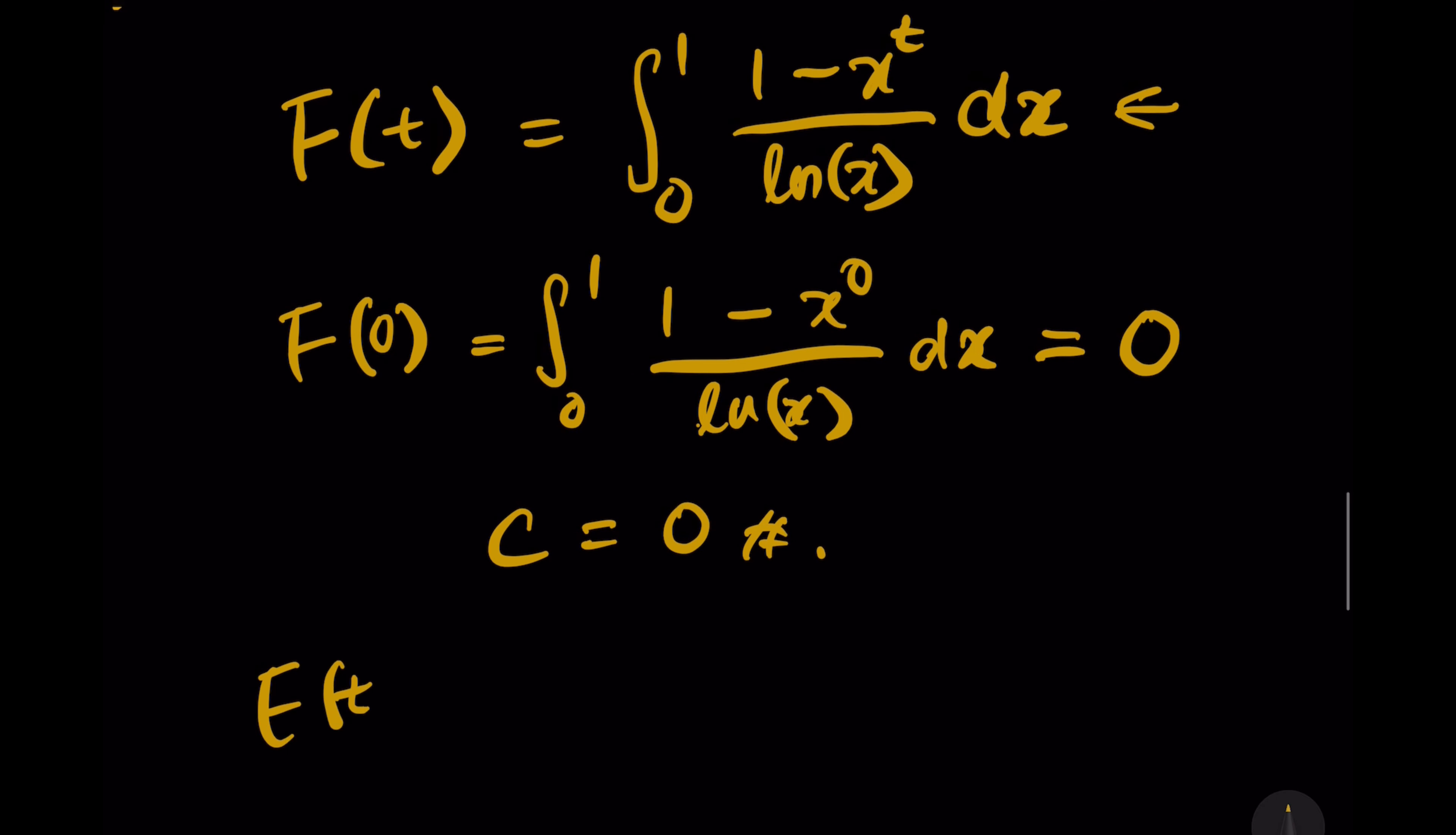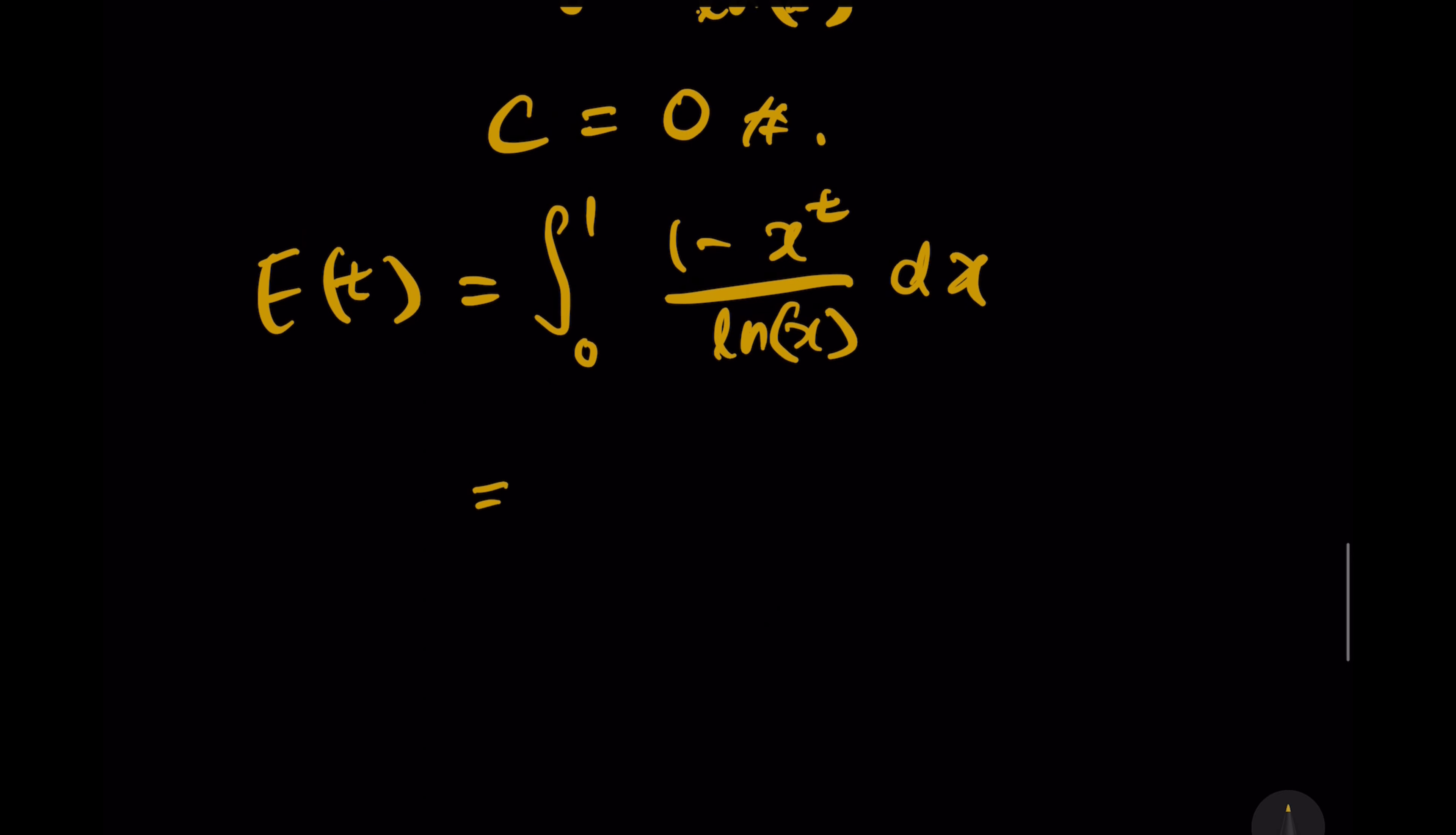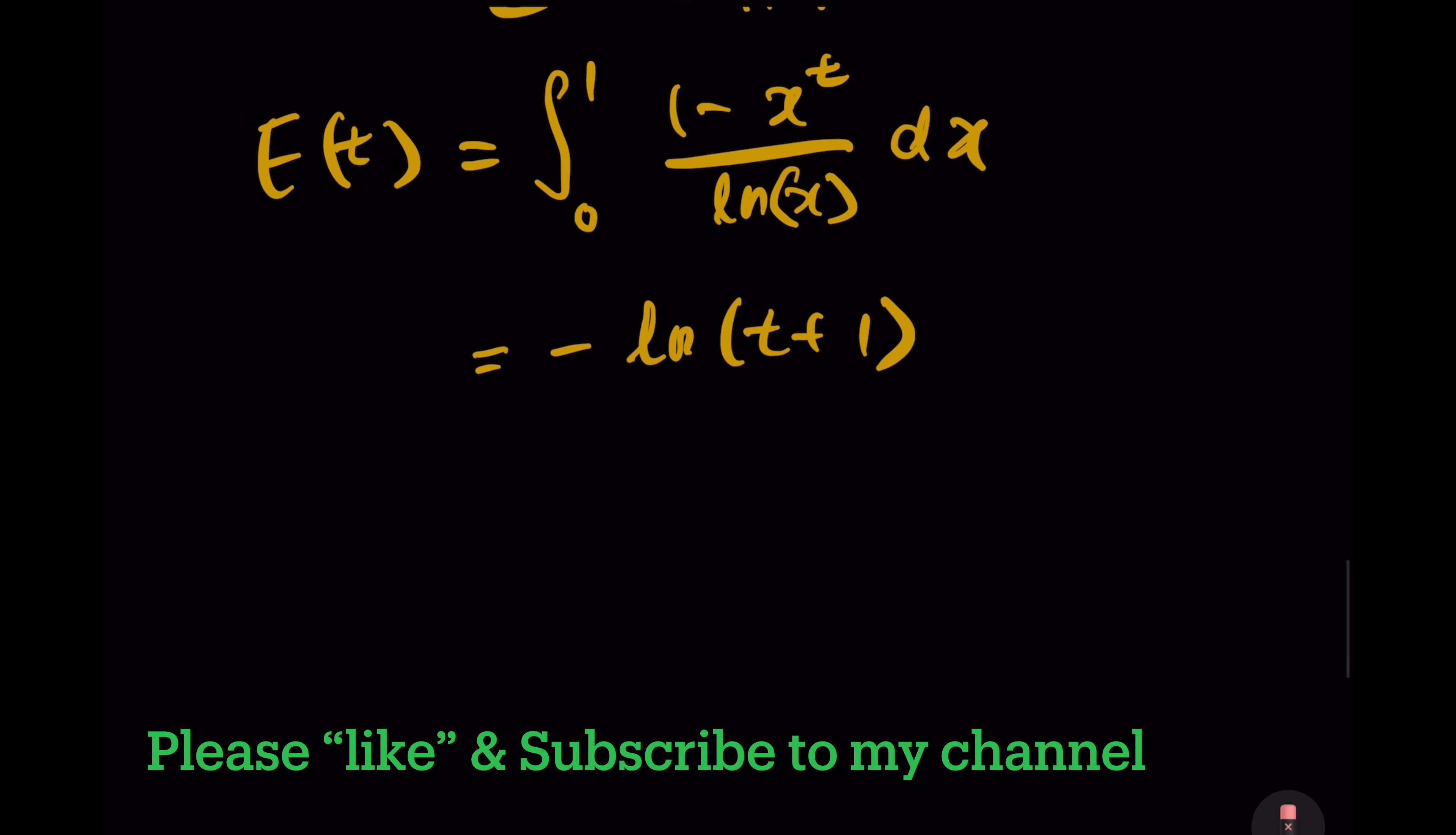F(t) is actually equal to the integration from 0 to 1 of (1 minus x^t) over ln(x) dx, which is also equal to the one we just found: negative ln(t+1) plus c. And then we know c is 0, so we just delete it.